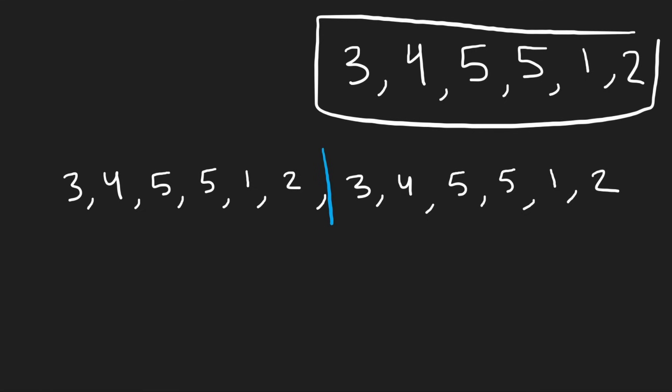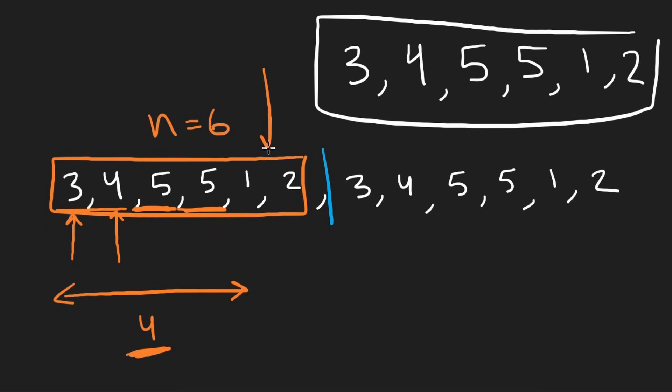I'm going to change colors. Three, and then check the next guy. Four, okay, so far we're in non-decreasing order. Then five. Okay, keep going. Another five. That's okay. If two adjacent elements are equal, that's perfectly fine. But then we see the one. One is smaller than five. So that tells us that, okay, we were so close. We had a length of four. If we could have just found a window of size n, which in this case is six, we would have been good. But we didn't find that. So what do we do?